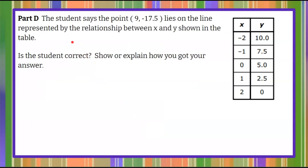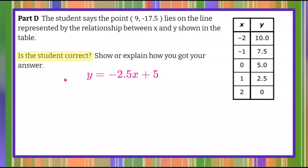And our last part, Part D: the student says the point (9, negative 17.5) lies on the line represented by the relationship between x and y shown in the table. Is this student correct? Show or explain how you got your answer. Pause one more time, determine whether or not the student is correct, and then come back. Welcome back — we're trying to determine if the student is correct. Does this point lie on the line? We'll bring forth our equation from Part C, and understand that we have an input x and an output y.